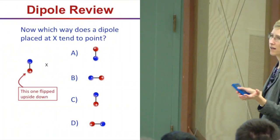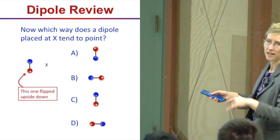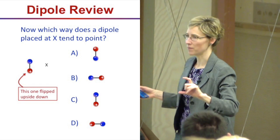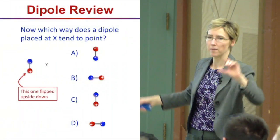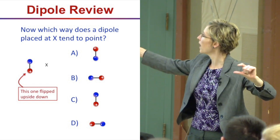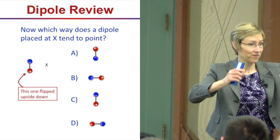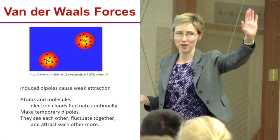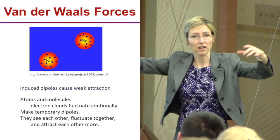If I hold the controlling dipole and flip it back and forth repeatedly, the dipole at X fluctuates back and forth in response. This is actually the source of van der Waals forces — fluctuating dipole moments. In chemistry, van der Waals forces are described by a complicated energy expression, but the physical origin is these fluctuating dipole moments.